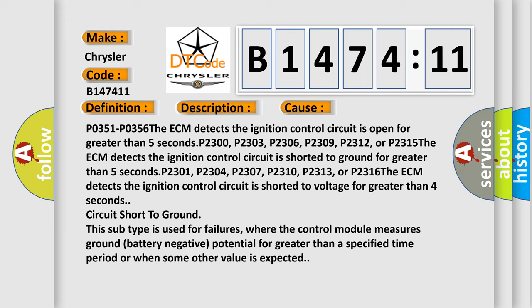P2301, P2304, P2307, P2310, P2313, or P2316: The ECM detects the ignition control circuit is shorted to voltage for greater than 4 seconds.